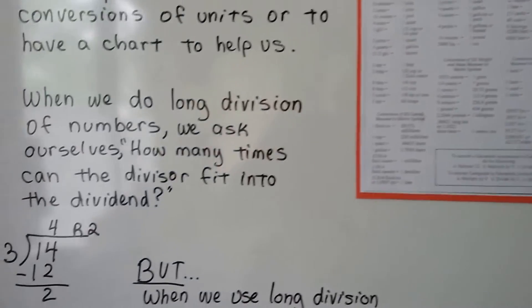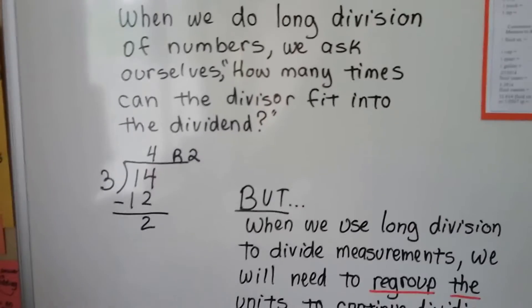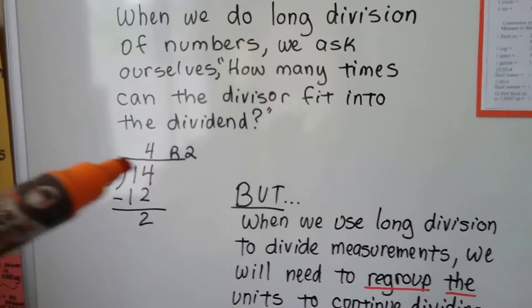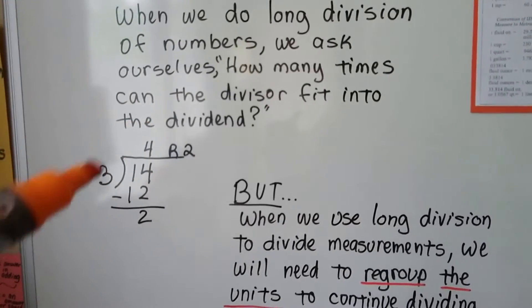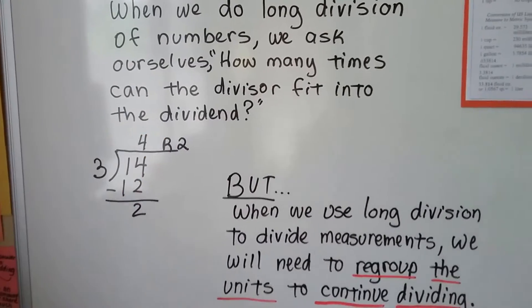When we do long division of numbers, we ask ourselves how many times can the divisor fit into the dividend. The 3 is the divisor, the 14 is the dividend. So 3 can fit into 14 four times. 3 times 4 is 12, we do our subtraction and get a 2. So we have 4 remainder 2.